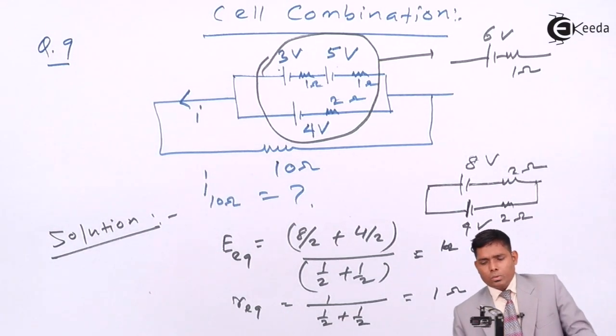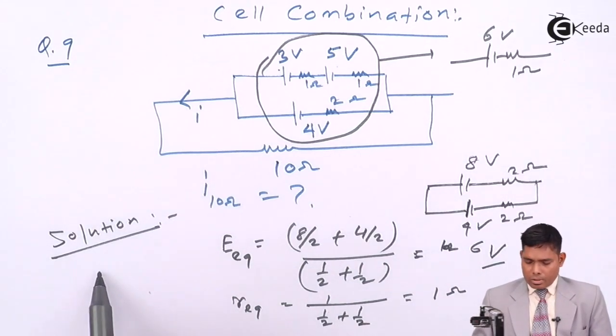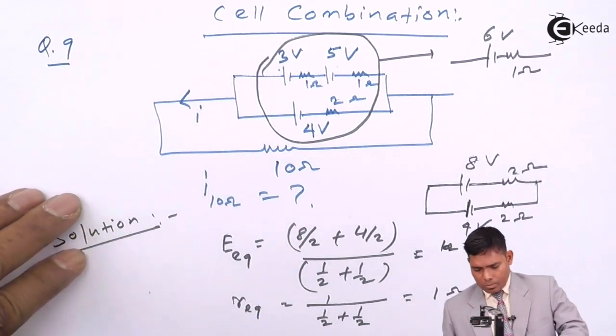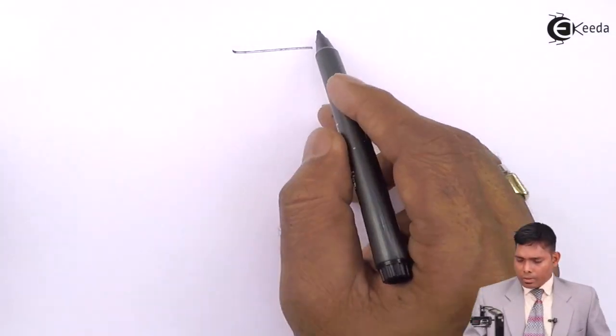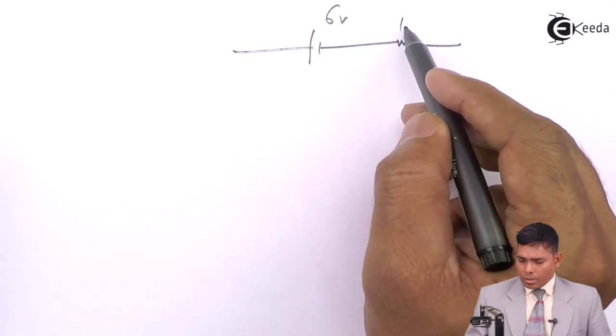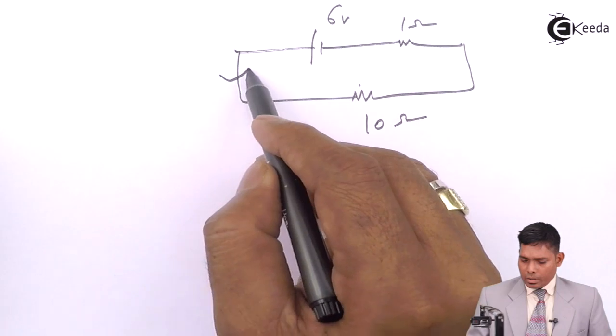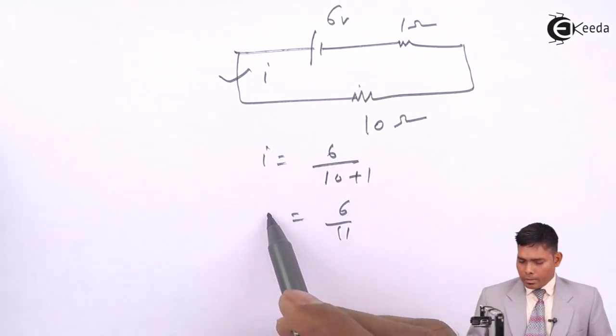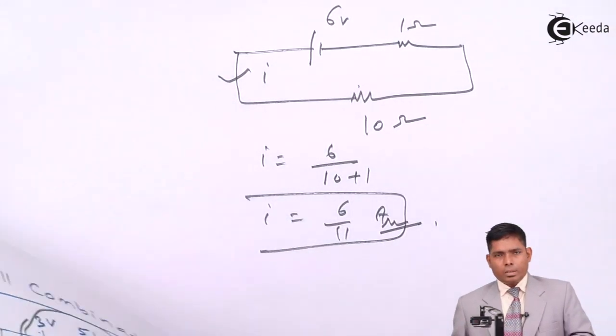So the cell of EMF 6 volt and 1 ohm resistance. Therefore, current in this branch is I equal to, so what we have got is the situation like this, 6 volt, 1 ohm internal and 10 ohm external, the current is required here. The current will be 6 divided by 10 plus 1, 6 by 11 amperes. This is the answer to this question. Thank you.